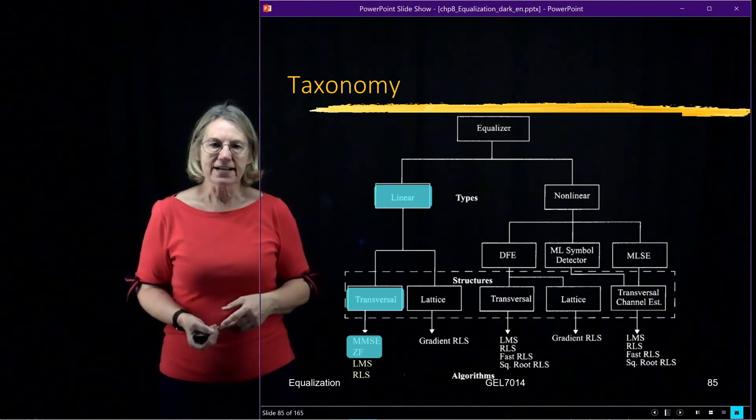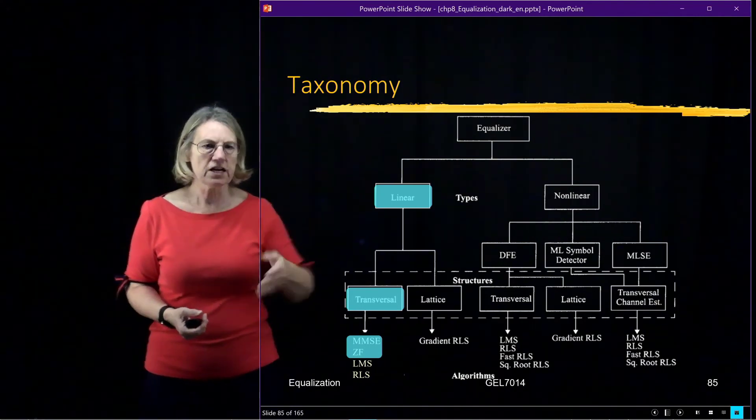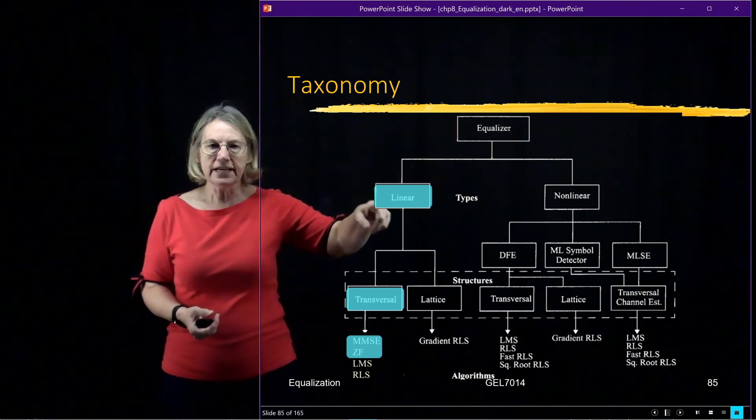So if we look now at the taxonomy, what have we accomplished here? We've looked over the linear, and we've looked over the minimum mean squared error.